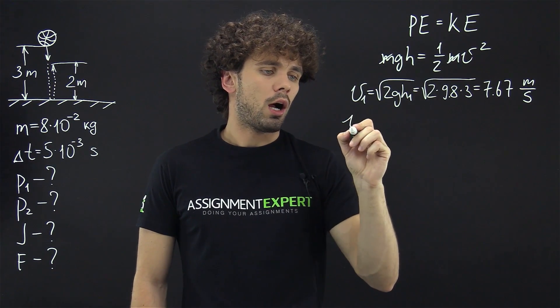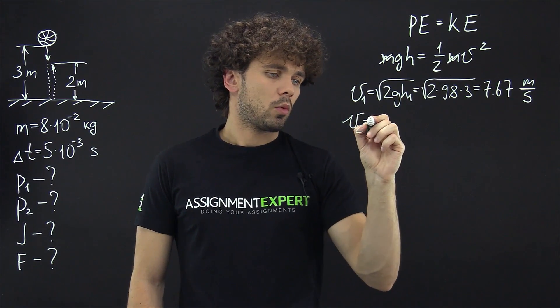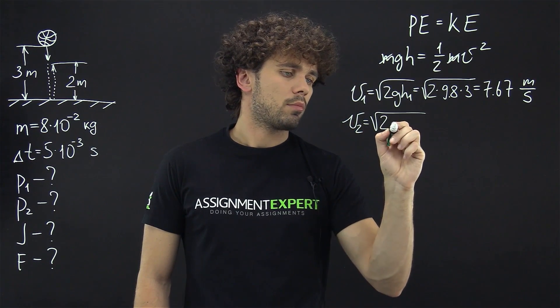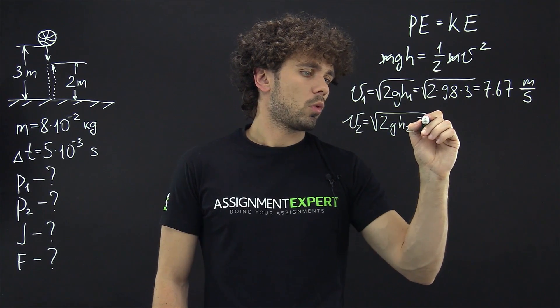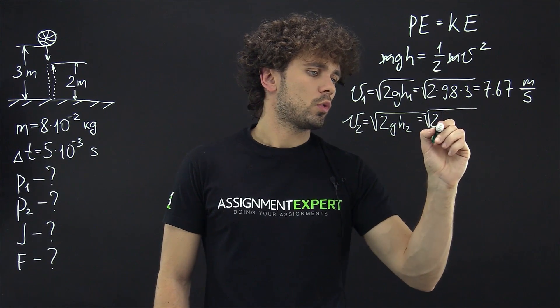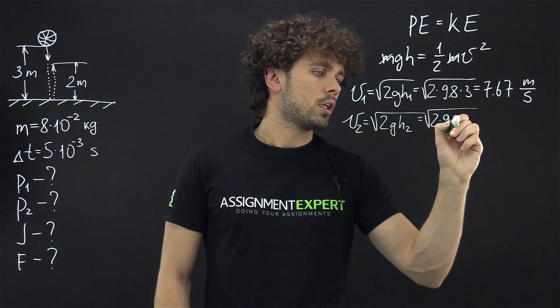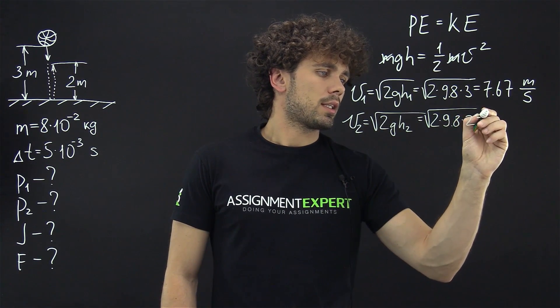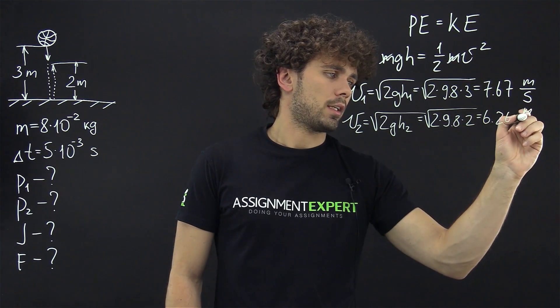Now velocity of the ball after the collision v2 equals the square root of 2 times 9.8 times 2. And we get 6.26 meters per second.